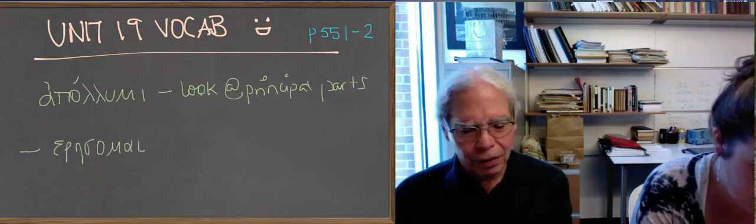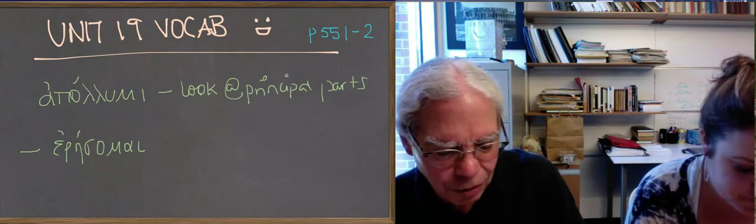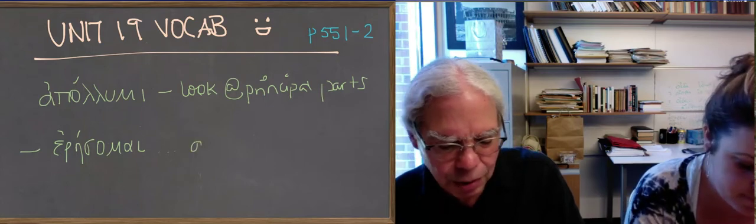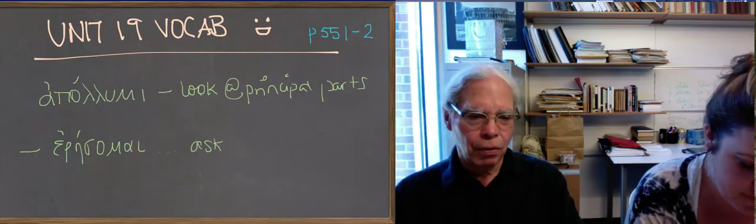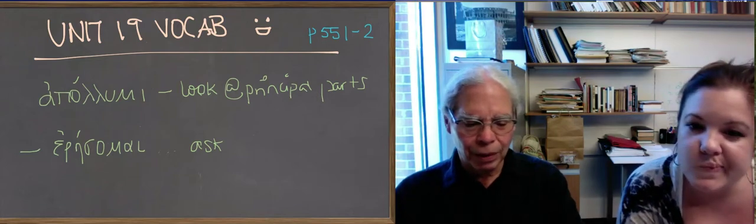So it's the verb whose feature is eresomai, whose aorist is a second aorist, eromain. And then they also give you the verb derived from it, again, without a present, aneresomai and aneromain, both of which mean ask. So this is an old root verb whose present form has essentially disappeared from the language.